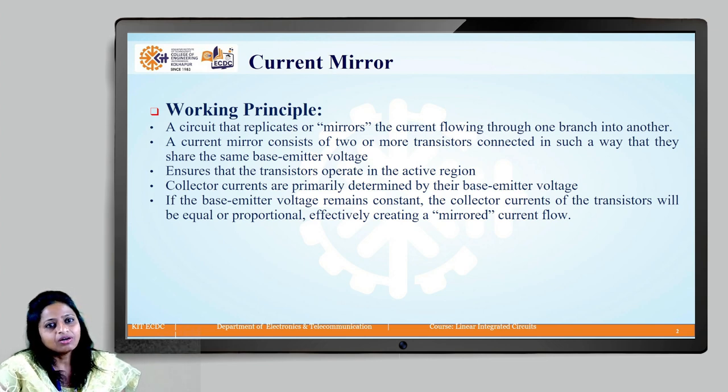What is a current mirror circuit? A circuit that replicates or mirrors the current flowing through one branch into another branch.